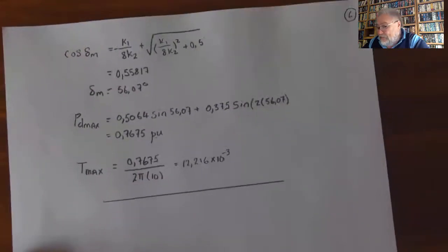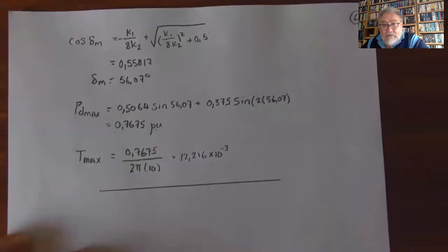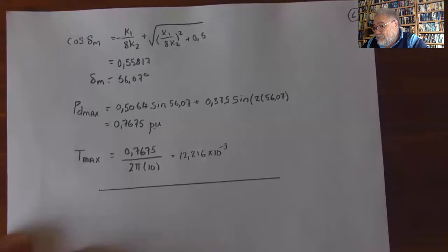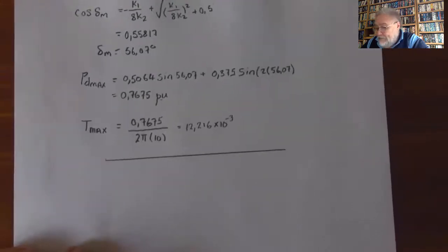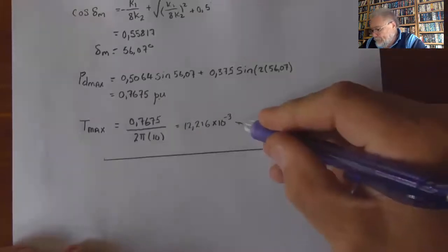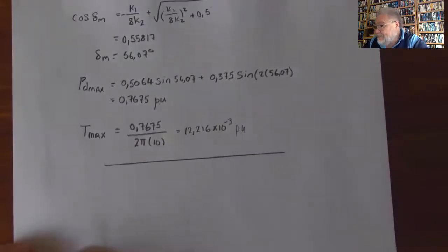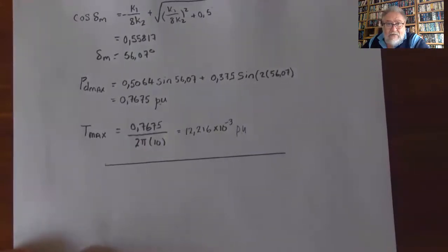Substituting back: maximum power = 0.5064·sin(56.07°) + 0.375·sin(2 × 56.07°) = 0.7675 per unit. Therefore maximum torque = 0.765 / (2π / 10) = 12.216 × 10⁻³ per unit. To get the actual value, multiply by the machine rating. This concludes Chapter 4.